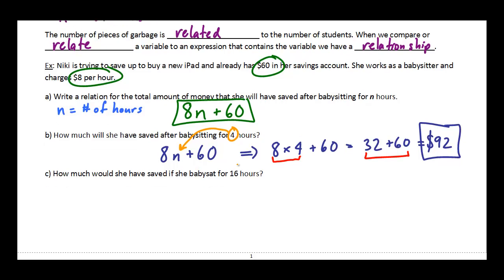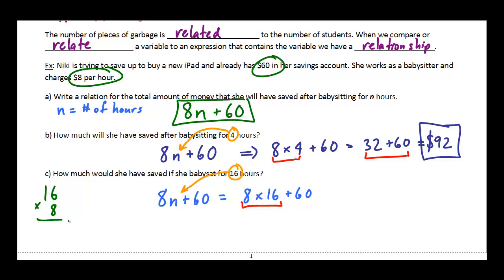How much would she have if she babysat for 16 hours? Same expression — we just evaluate for n = 16. So it becomes 8 times 16 plus 60. Multiplication comes first in BEDMAS. 8 times 16: 8 times 6 is 48, and 8 times 1 is 8, plus the carried 4 gives 12, so we get 128. Then 128 plus 60 is $188.